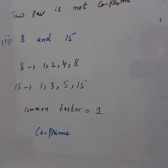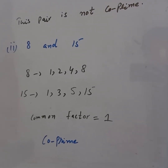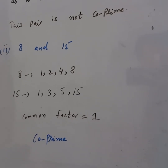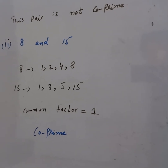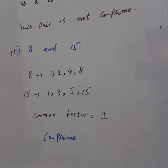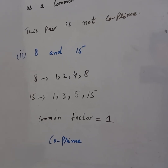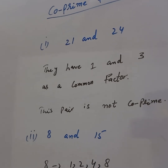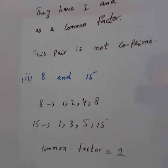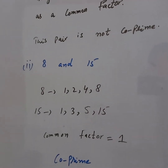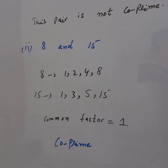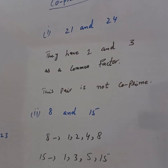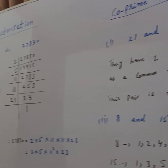If any common factor other than 1 exists, the pair will not be co-prime. But here the only common factor is 1, so 8 and 15 are a co-prime pair. If you have any questions, you can ask. Please subscribe, like, and share this channel.